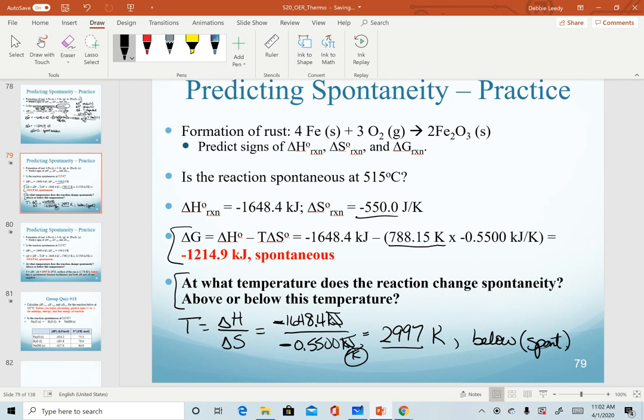Another way to think about it is to look at the signs of enthalpy and entropy. Since both of these are negative, again, when we predict delta G, we know that a reaction will be spontaneous at relatively low temperatures. For this reaction, low means anything below our calculated value of 2997 kelvin.